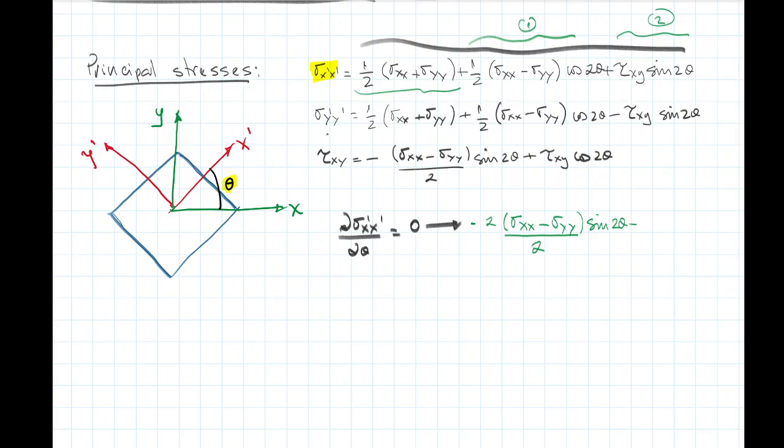Then minus 2 times the shear stress tau_xy, cosine of 2 theta. And this has to be equal to zero.